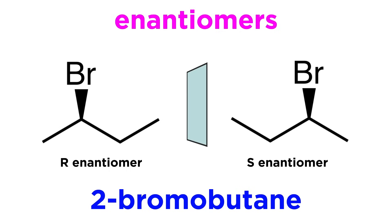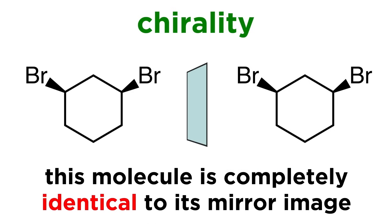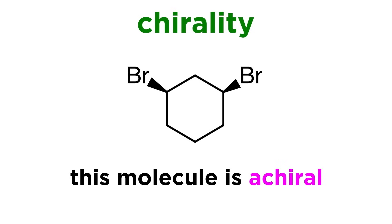They are molecules that are mirror images of one another and are not the same molecule. Some molecules are the same as their mirror image. Taking the mirror image does not change the molecule — it aligns atom for atom with the original. These molecules would be considered achiral.